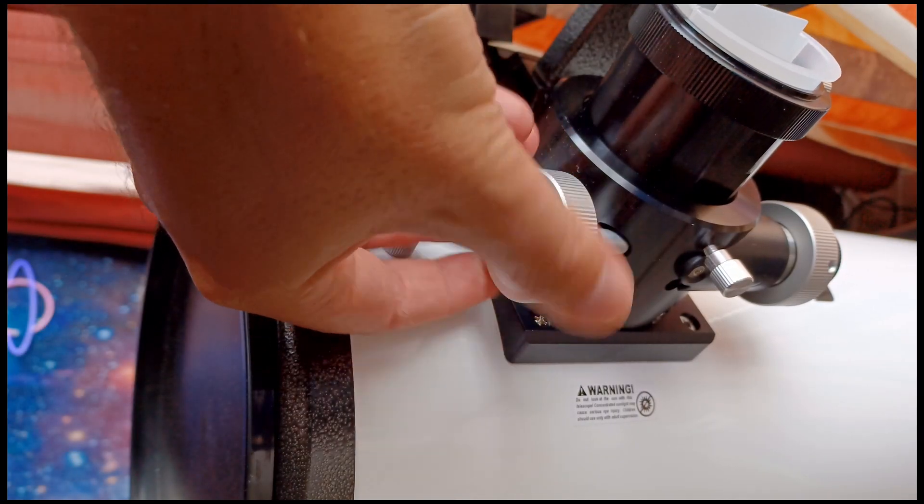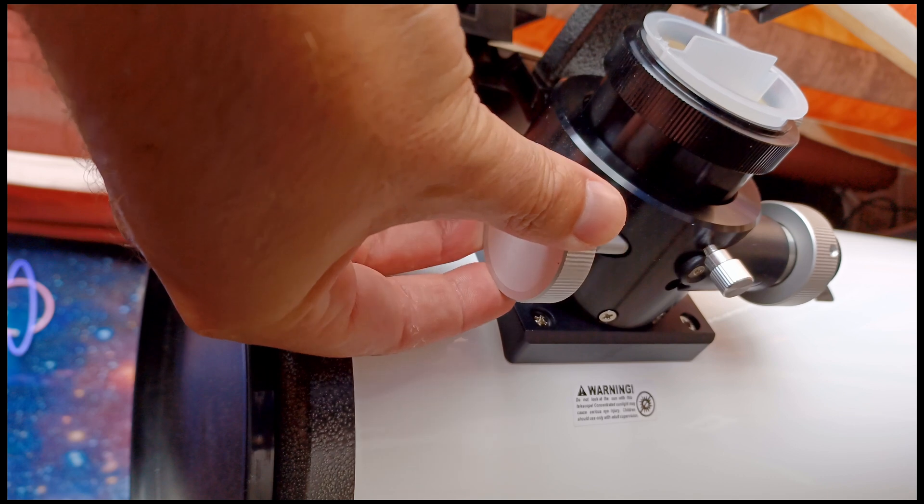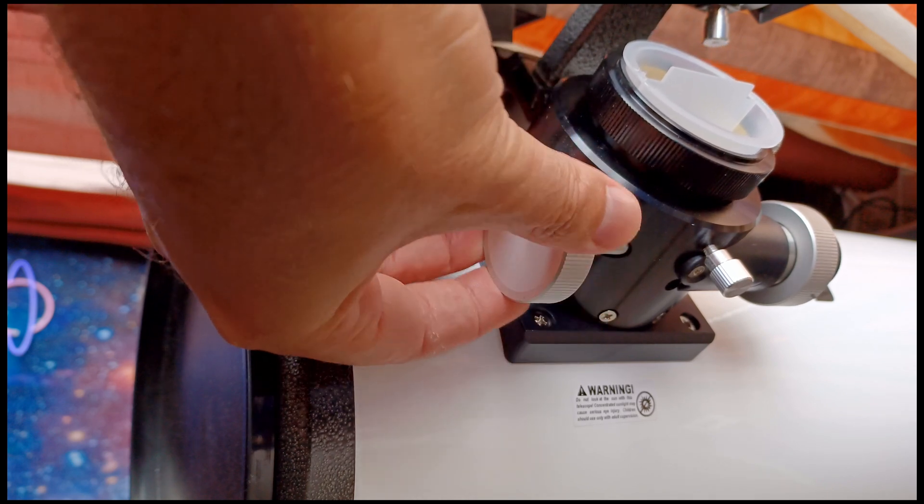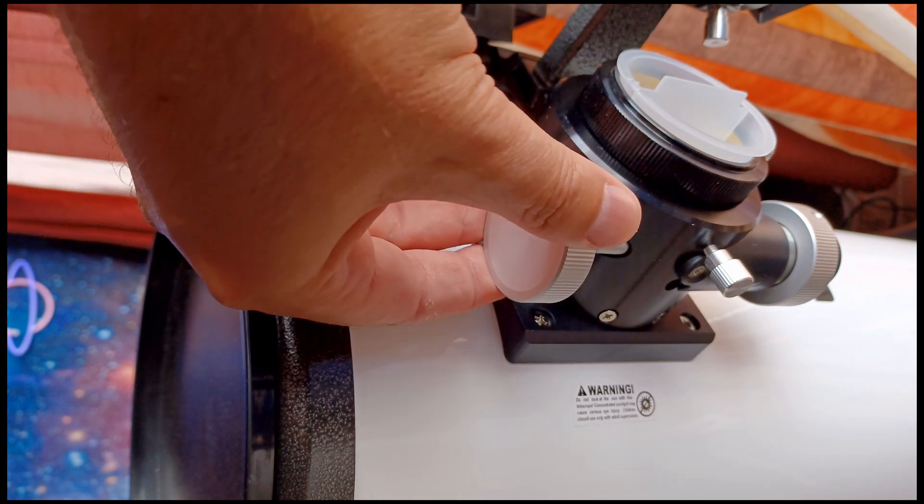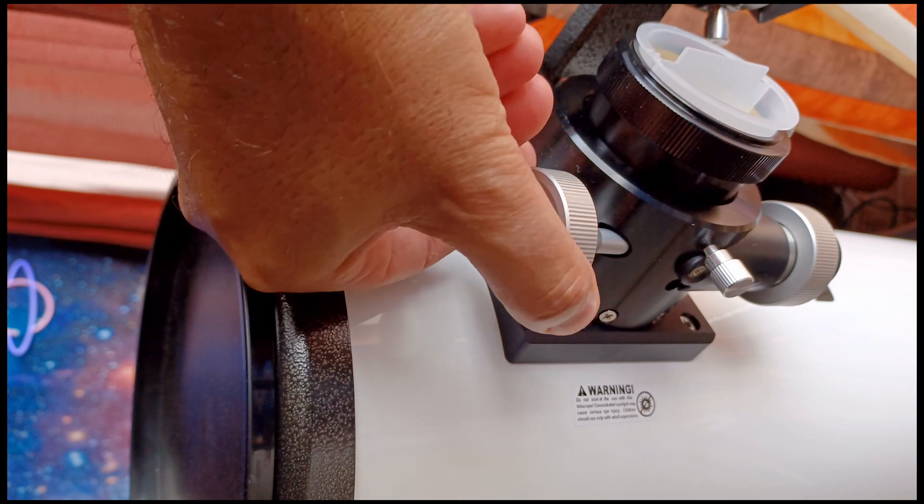To fix that and get focus, you just have to move the focuser up or down. To do that, you have to turn the wheels to one direction, anticlockwise or clockwise. There's only two ways to do it.